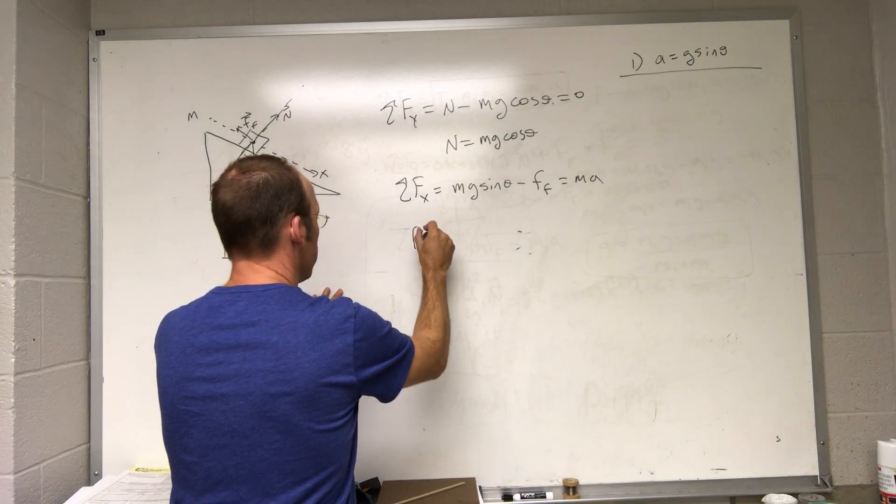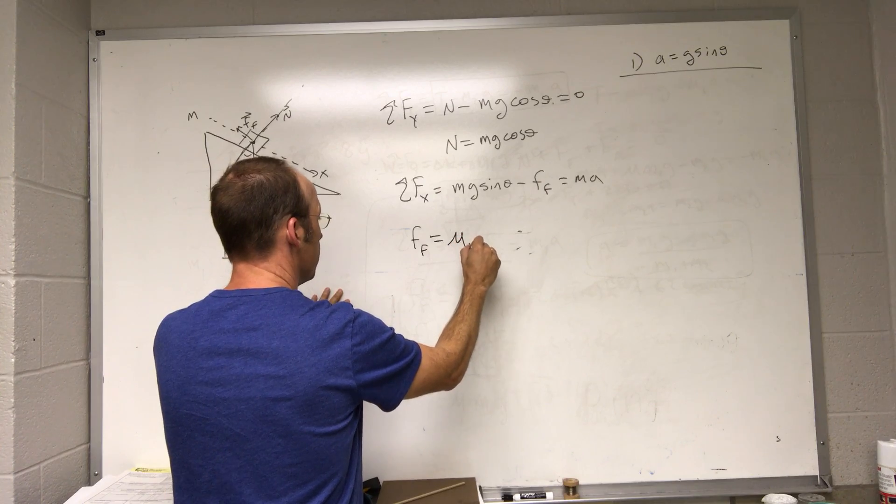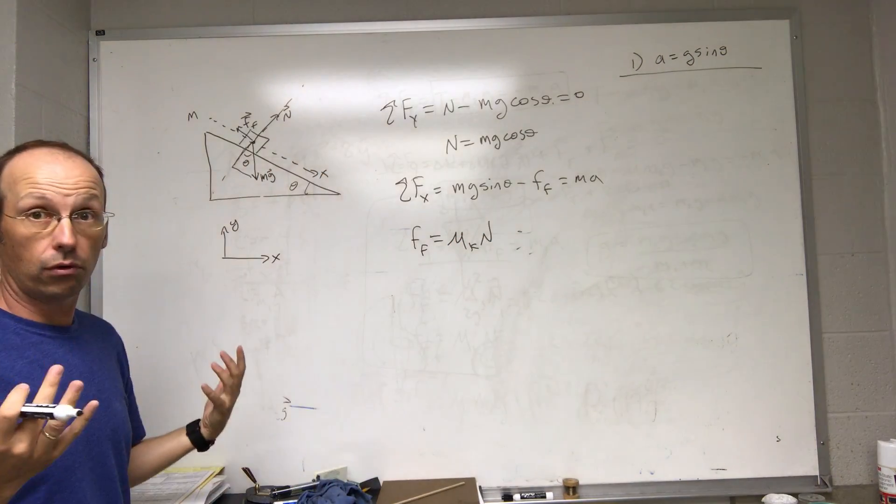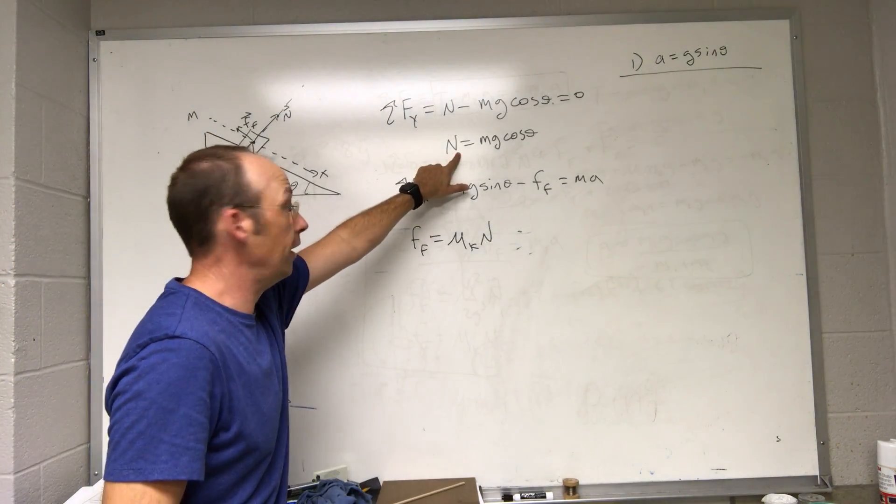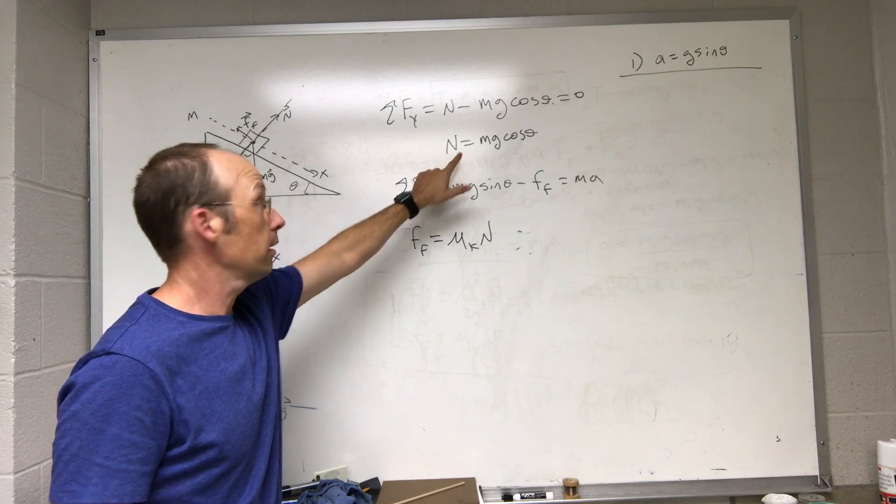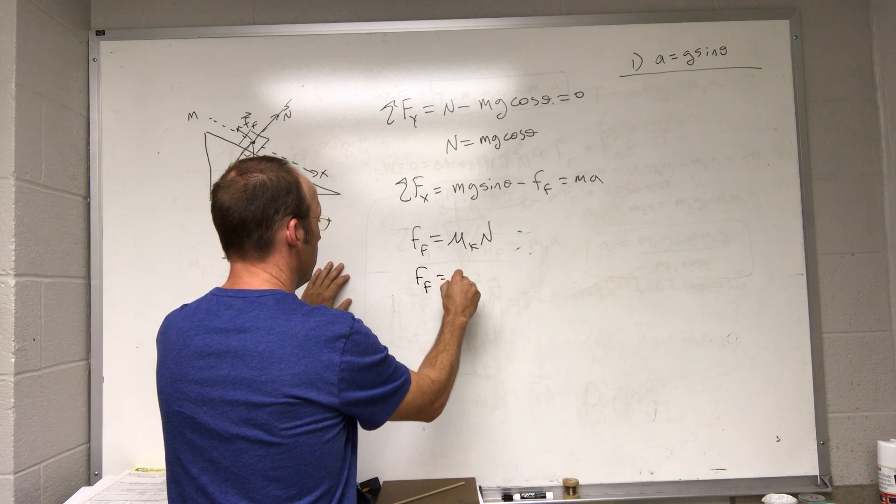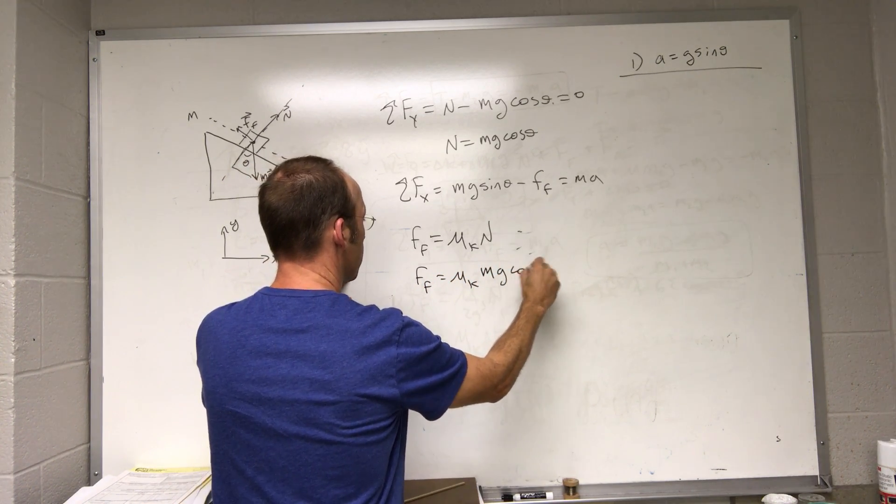My model says that the kinetic friction force is going to be equal to the coefficient of kinetic friction times the normal force. That's the rule. Not the weight. Not the weight. The normal force. If you see here, the normal force is not equal to the weight. So that's actually going to be the frictional force. It's going to be mu k times mg cosine theta.